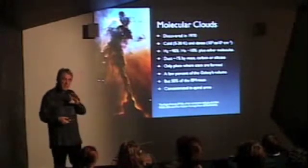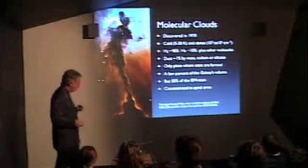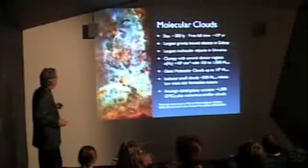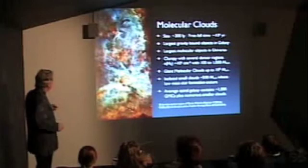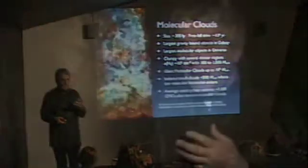Molecular clouds are mainly found in the spiral arms of the galaxy. Here is a different one: the Carina Nebula. You wouldn't actually be able to see it like this with visible light. This is a false colour image where a lot of the emission from this cloud is actually in the infrared, and the dust in particular contributes to this.